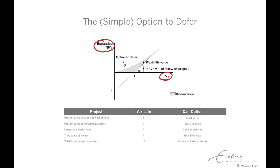The present value of the expected cash flows from oil development is the underlying value. And the exercise price of this call option is the investment to develop the field — the investment in the production platform. The time we have to decide to develop the field or not is the maturity of the option.